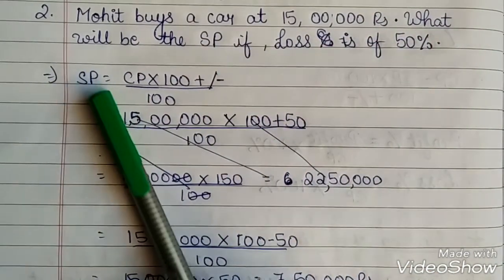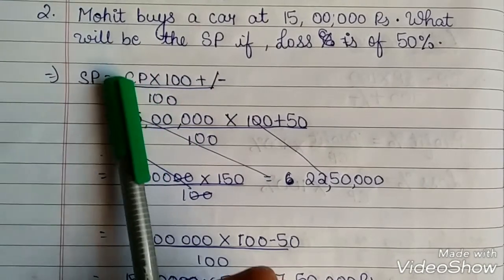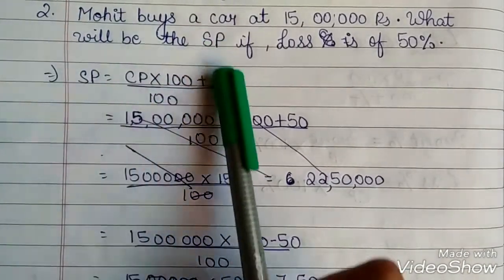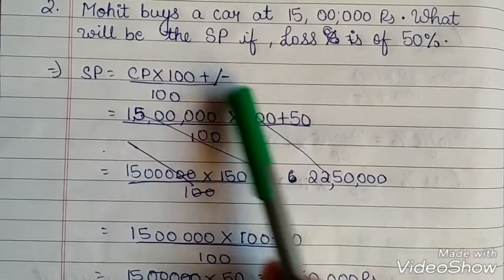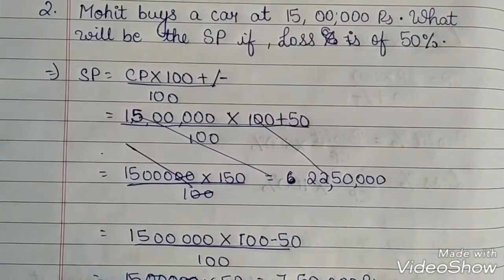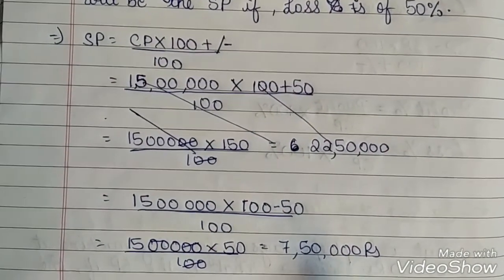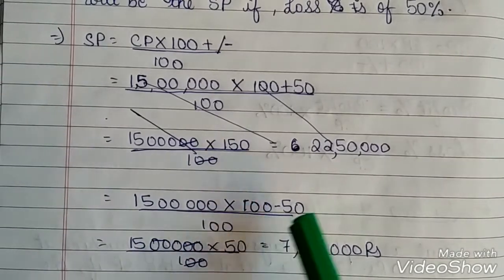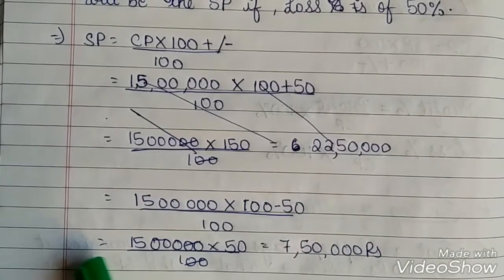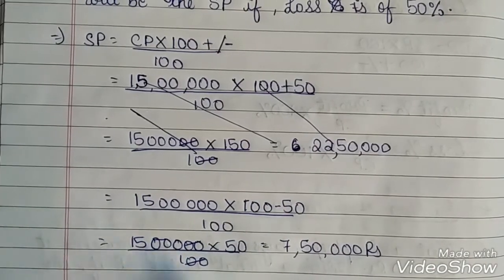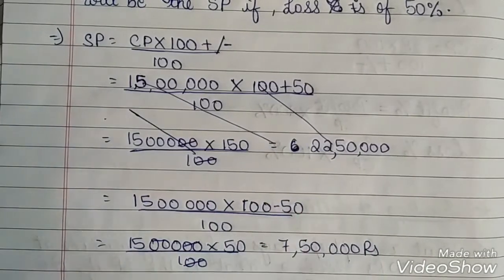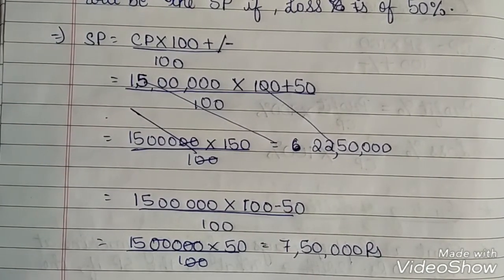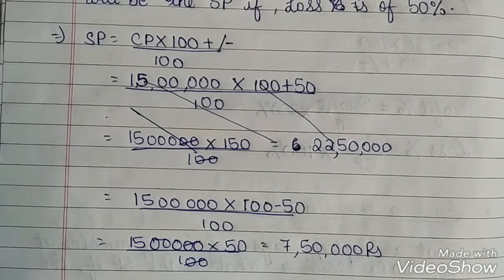Here 15,000 is the cost price. The process is this. As I told you earlier, cost price multiplied by 100 plus minus divided by 100. Here, instead of subtracting, I added here. So, I have cut it down here. The answer will be 15,000 multiplied by 100 minus 50 divided by 100 is equal to 15,000 into 50 divided by 100. Two zeros, two zeros cutting down. 15,000 into 50 is equal to 7,50,000. So, the selling price will be 7,50,000.